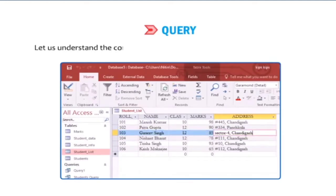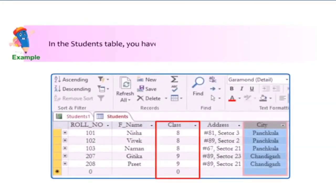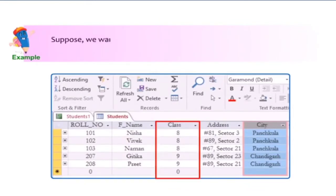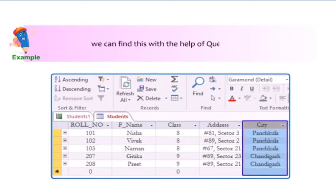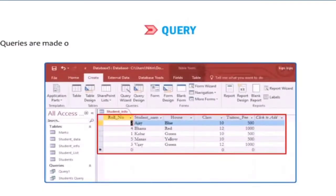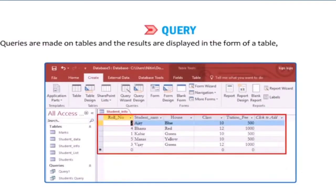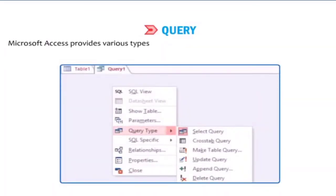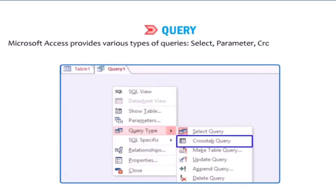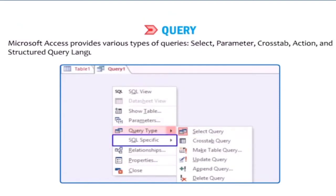Let us understand the concept of queries with an example. In a students' table, you have records of class 8th as well as class 9th students. Suppose we want to extract the records of students of class 8th and 9th who reside in Panchkula and Chandigarh — we can find this with queries. Queries are made on tables and results are displayed as rows and columns matching the given condition. Microsoft Access provides various types of queries: select, parameter, crosstab, action, and SQL query.